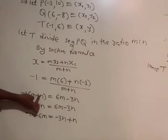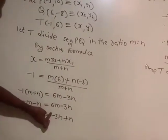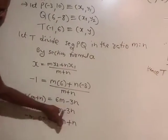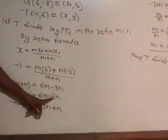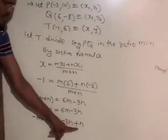Moving m terms to the left and n terms to the right: -m - 6m = -3n + n. This gives -7m = -2n.